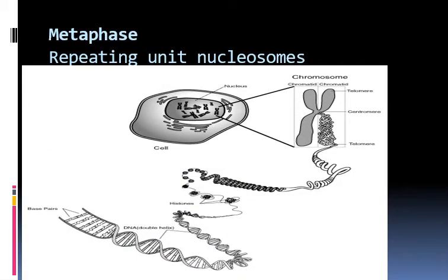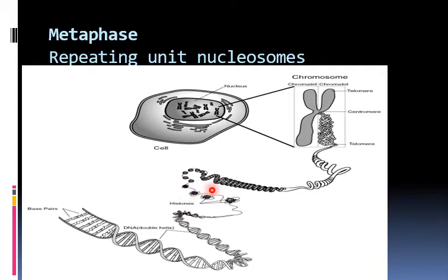In metaphase, the human cell contains 46 chromosomes, and the length of DNA in each is about 5 cm on average. Therefore, the human cell contains at least 2 meters of DNA. The DNA is packed or bound into histone molecules to form string beads called nucleosomes. This string of beads is coiled tightly to form loops at first, then condensed to give the highly compact form characteristic of the metaphase chromosome.